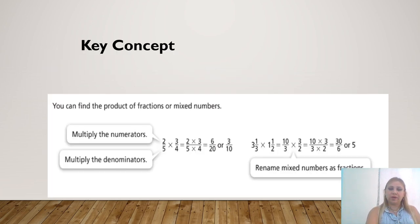This is a key concept for our lesson. You can find the product or the answer of multiplication of fractions or mixed numbers by multiplying the numerators, then multiplying the denominators, then simplifying if needed. And of course, if we have a mixed number, we have to rename it first before multiplying.